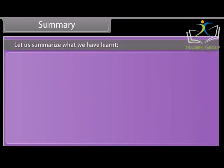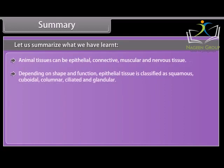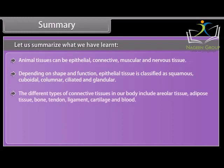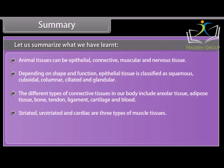Summary: Animal tissues can be epithelial, connective, muscular and nervous tissue. Depending on shape and function, epithelial tissue is classified as squamous, cuboidal, columnar, ciliated and glandular. The different types of connective tissues include areolar tissue, adipose tissue, bone, tendon, ligament, cartilage and blood. Striated, unstriated and cardiac are three types of muscle tissues. Nervous tissue is made of neurons that receive and conduct impulses.